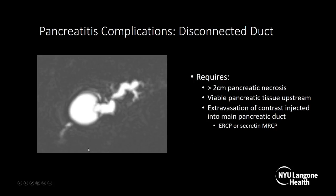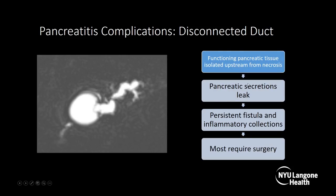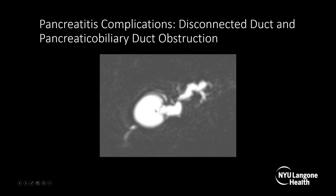On this coronal MRCP, there's a cyst and upstream the main pancreatic duct is dilated. There's an area that's discontinuous, and then the downstream portion is normal caliber. This is called disconnected duct syndrome, which requires over 2 centimeters of pancreatic necrosis and viable pancreatic tissue upstream. The viable tissue secretes pancreatic enzymes, causing leaking of pancreatic secretions that leads to a persistent fistula and inflammatory collection. Diagnosis requires demonstrating extravasated contrast through the main pancreatic duct by ERCP or secretin MRCP. Most cases require surgery — resection of the disconnected segment or a pancreaticojejunostomy. There may also be pancreatic biliary duct obstruction as well.